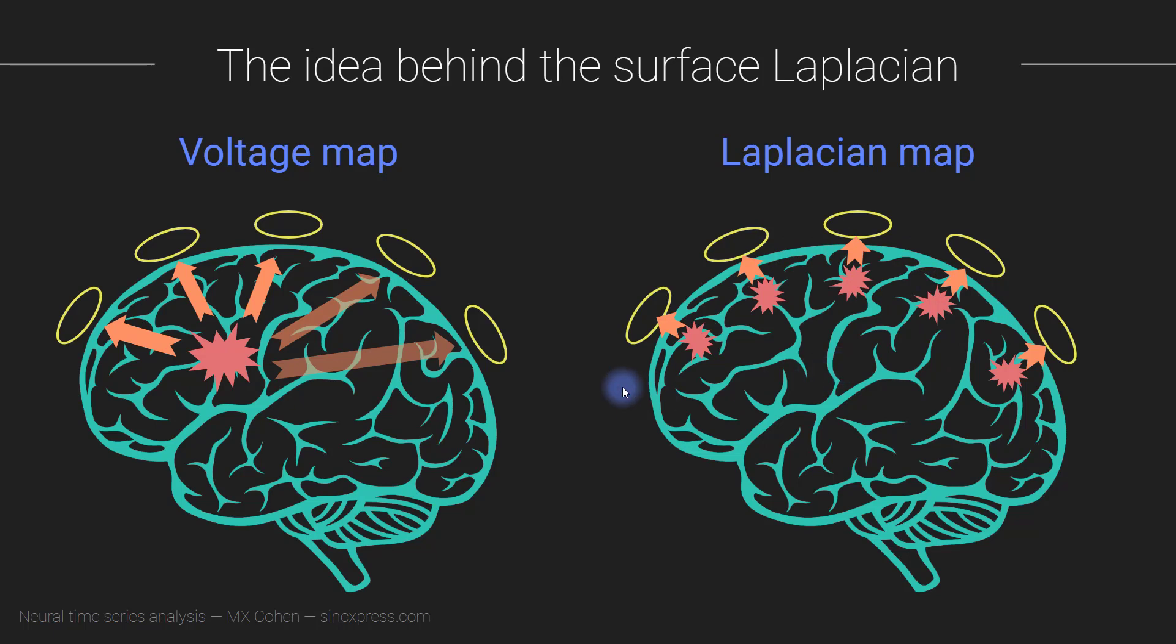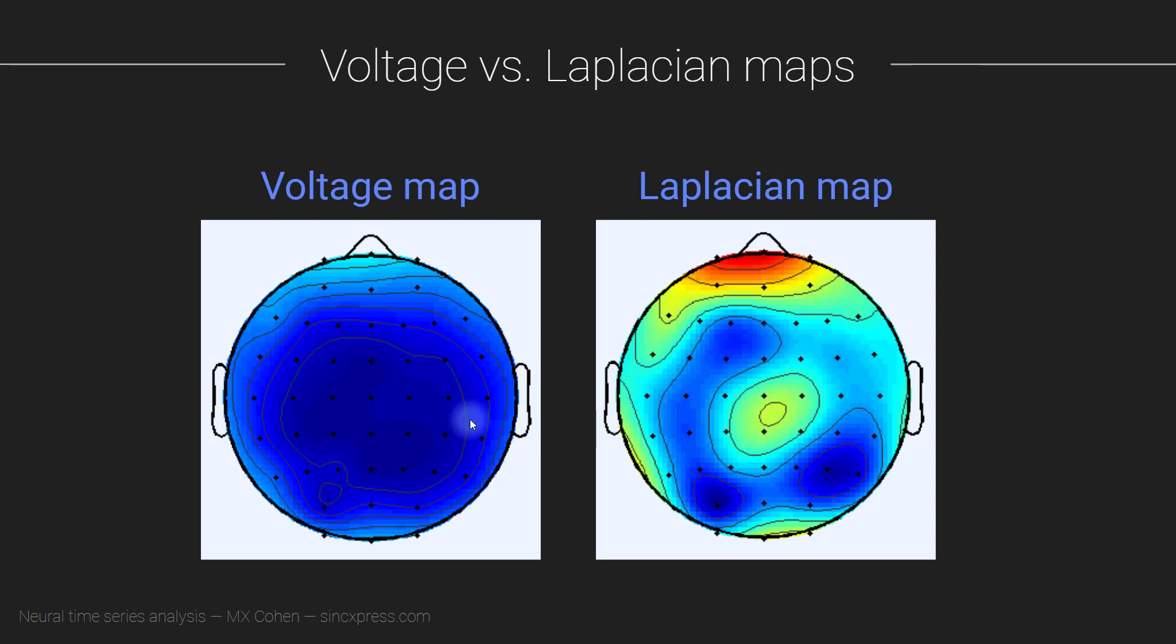Here you see an example of real data. Both of these maps come from the same time point. This is showing the original voltage map, and this shows the Laplacian map, a spatially filtered version of exactly these data. On first glance, they might look really different, but if you look around for a moment, you will see that there's a lot of subtle features that are obvious here in this map that are difficult, but eventually you can find them in this map.